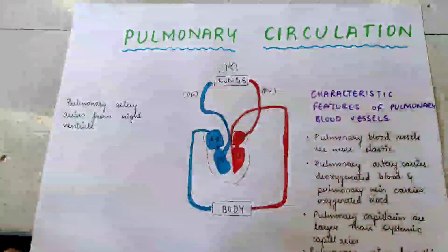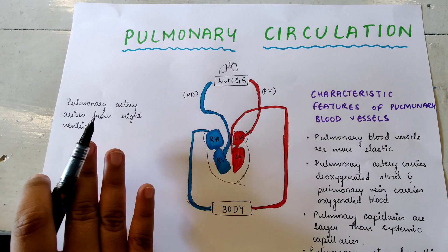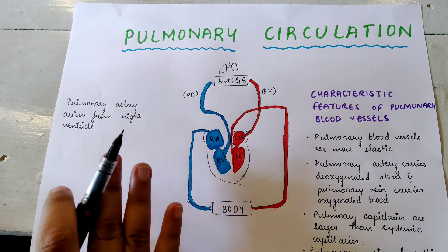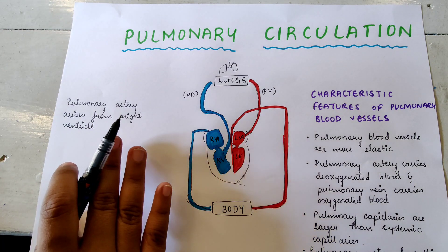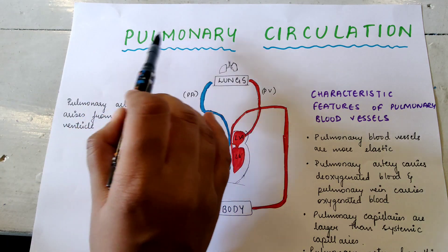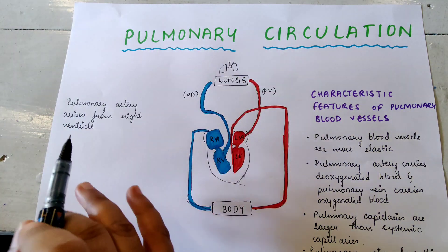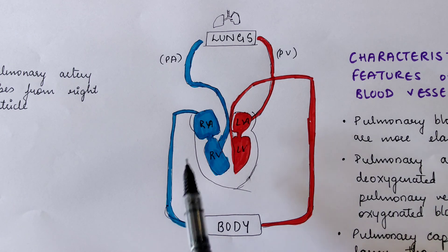Pulmonary circulation. In this chapter we will be dealing with the blood supply to the lungs, thus called the pulmonary circulation. Let's understand how this pulmonary circulation works.